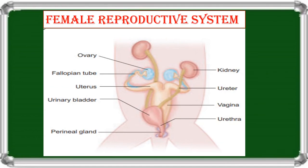The female reproductive system consists of a pair of ovaries. Ovaries are small ovoid structures located behind the kidneys in the abdominal cavity. From each ovary arises a funnel-shaped opening called the oviduct. The anterior part of the oviduct leads to the fallopian tube, which leads to the uterus. The two uteri join together to form the vagina.